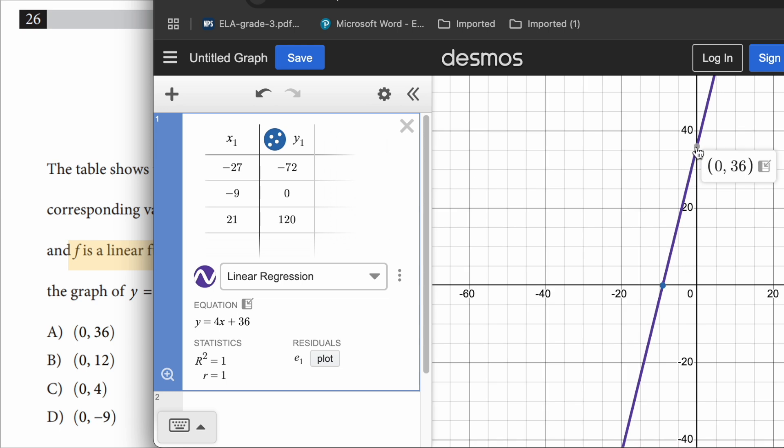So I'm going to just go down here and click on this point where the graph intersects the y-axis, which is 0, 36, which is our answer. Also, you can see the equation of the line here: y = 4x + 36. So 4 is the slope of this line, and 36 is the y-intercept.